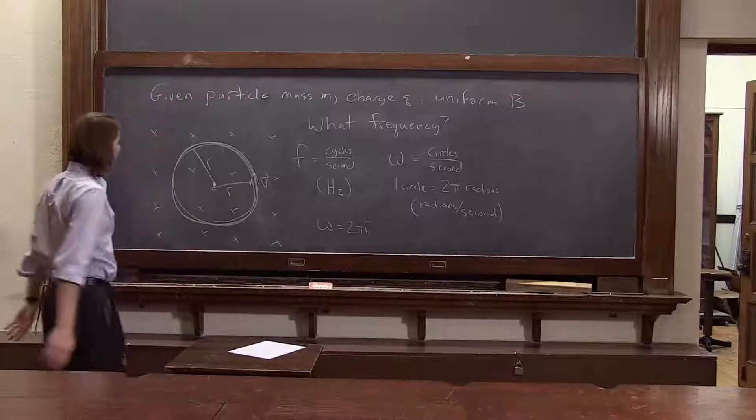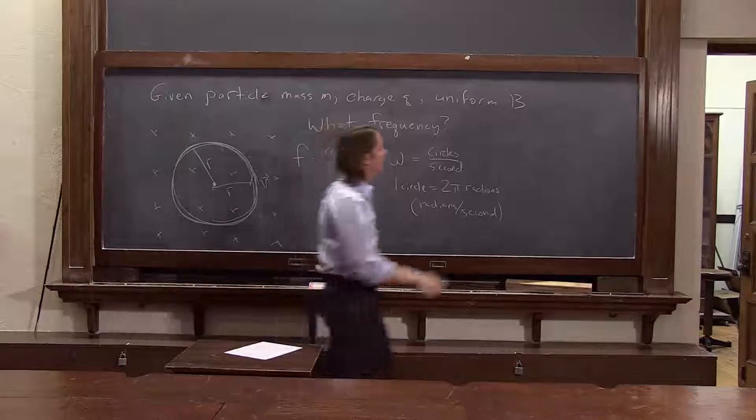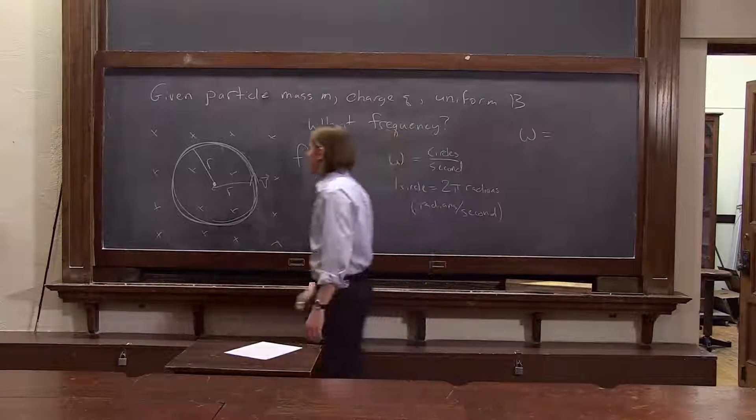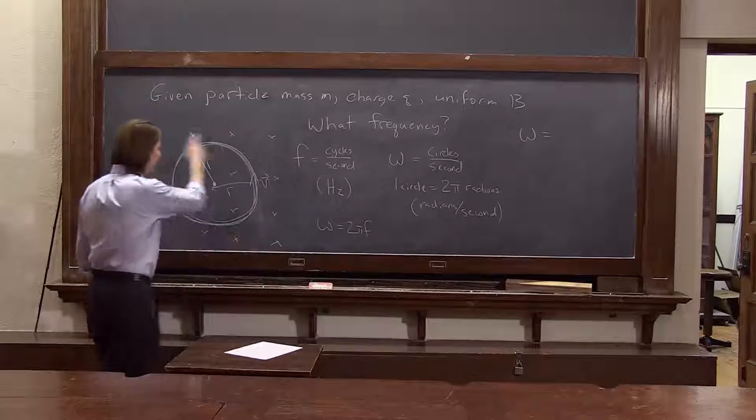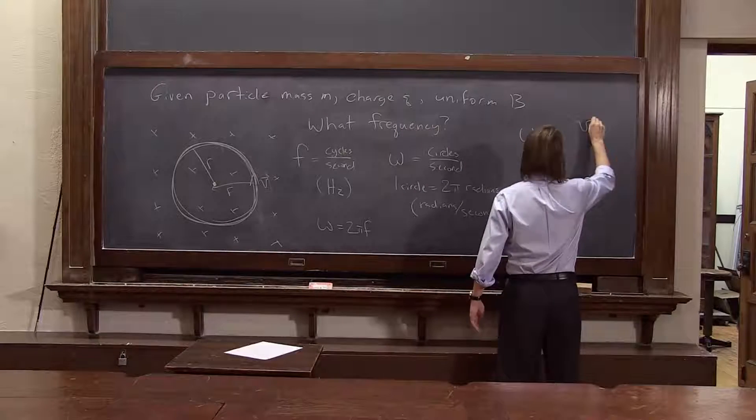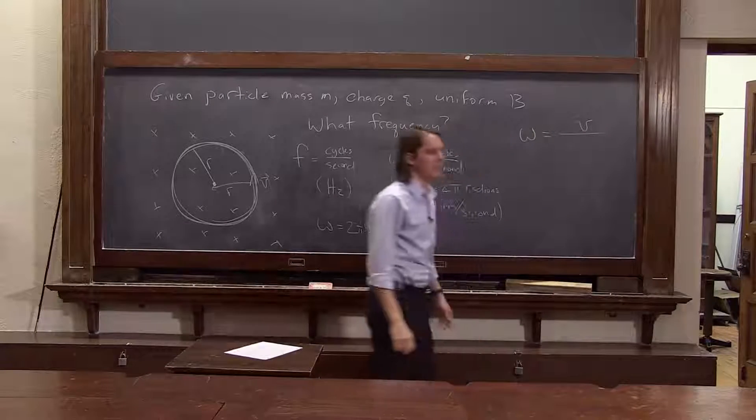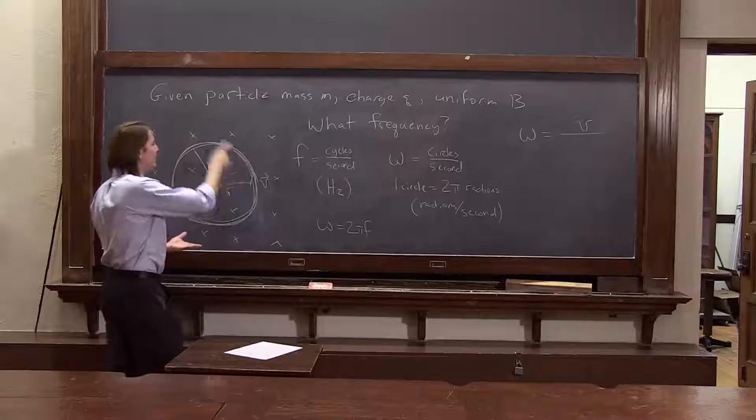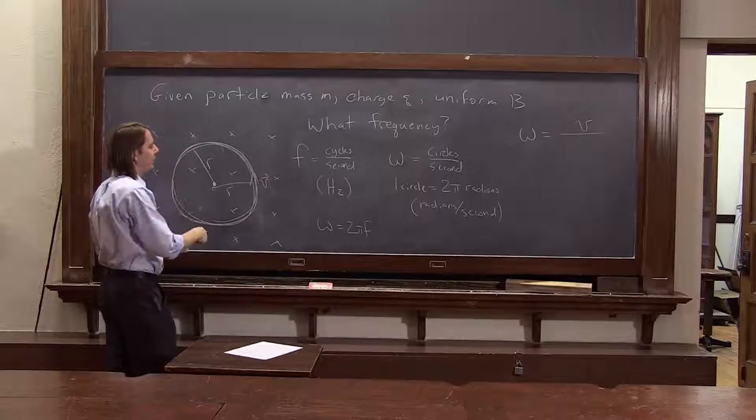Let's ask ourselves then, what is omega here? How do we get omega? In this case, we can just sort of talk our way through it. We know it's going to depend on how fast it's going, right? It's going some speed, v. And how many circles per second is that? Well, you take the speed, how many meters per second is it, say 10 meters per second, and you just divide by the circumference.